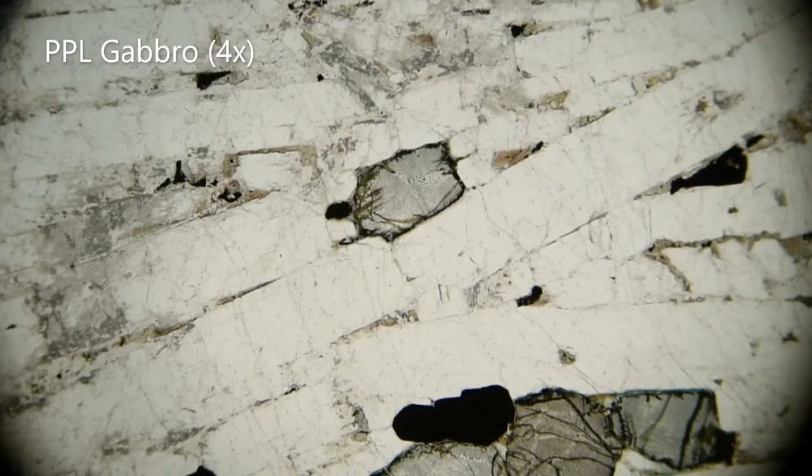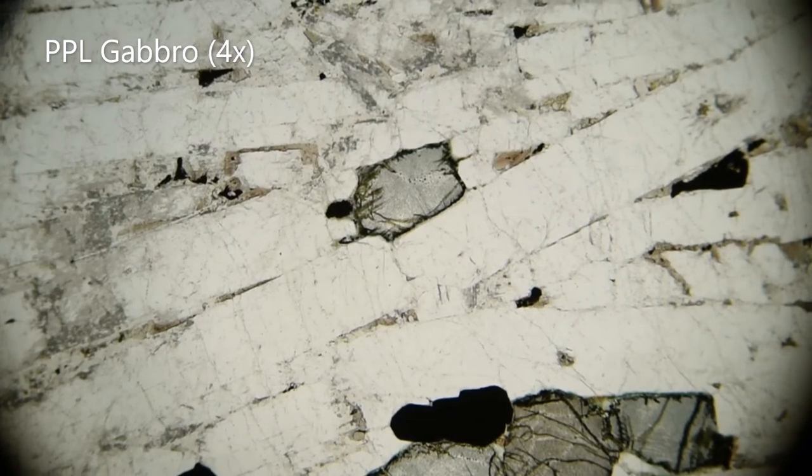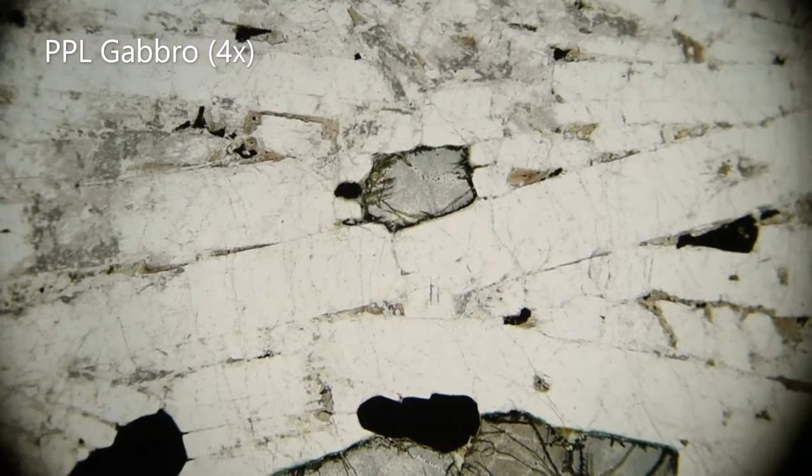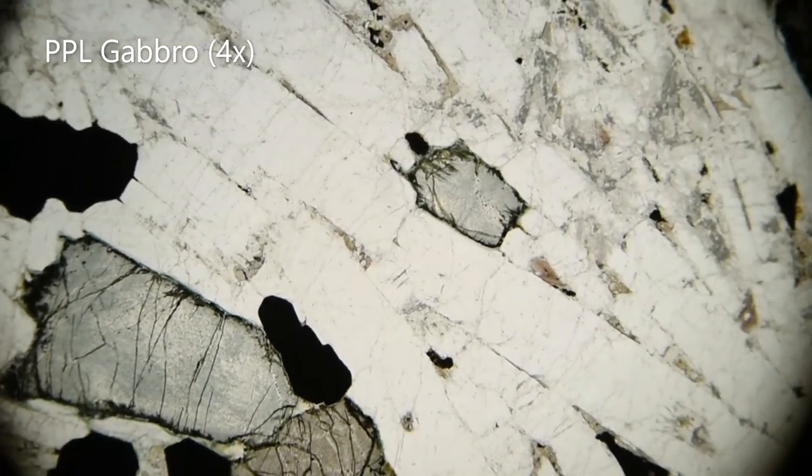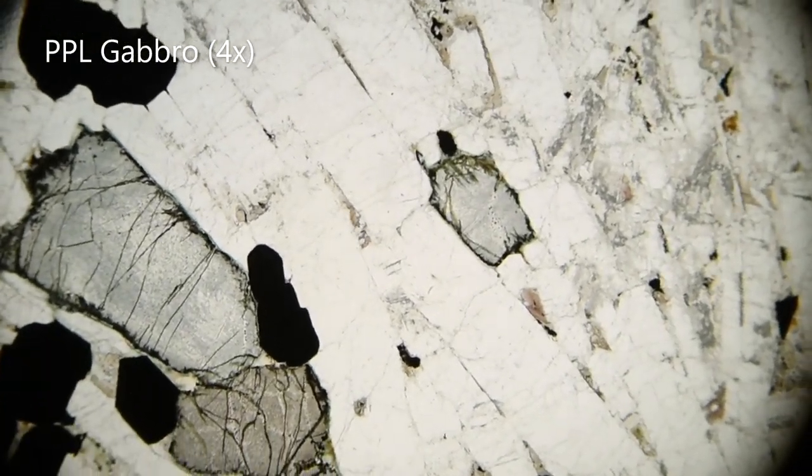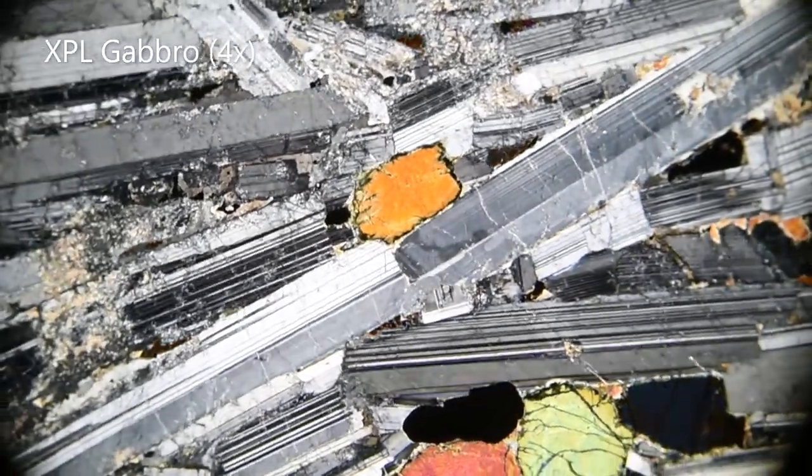This is an igneous rock called a gabbro. When we talk about relief, we look at how minerals stand out from one another. For example, the gray mineral, which is called olivine, has a high relief compared to the pale minerals around it, which are called feldspar.